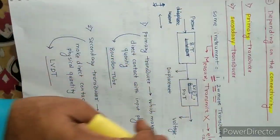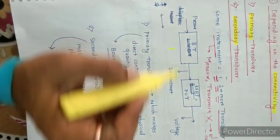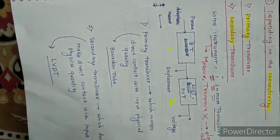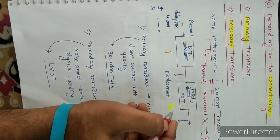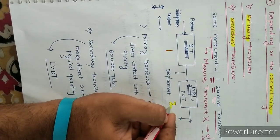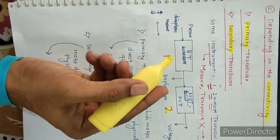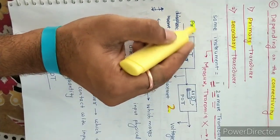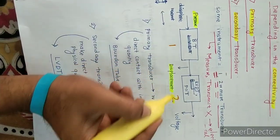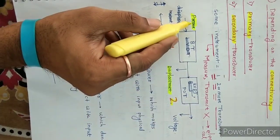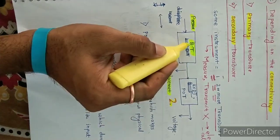There are two transducers: number one and number two. Here we are using the first transducer and here we are using the second transducer. For example, pressure is an input quantity which is converted into displacement.